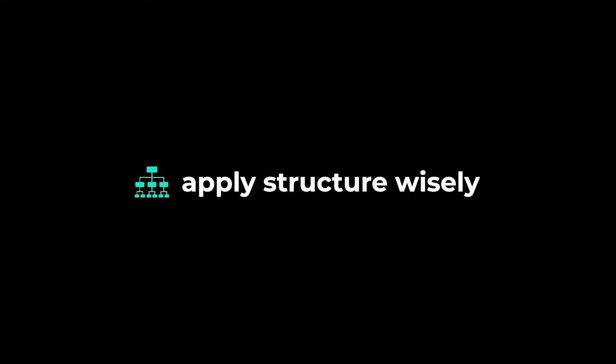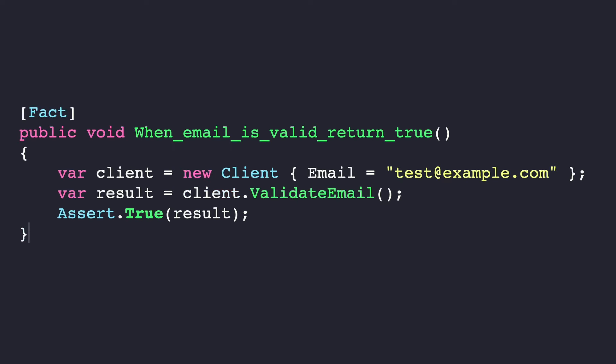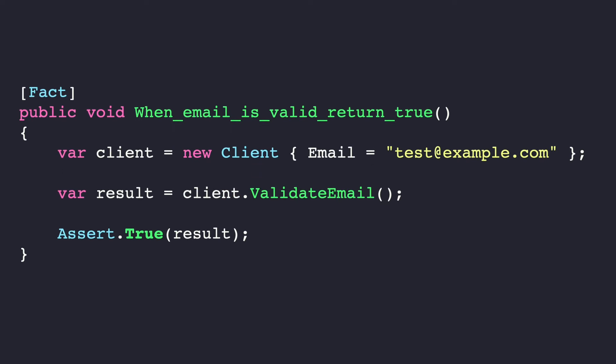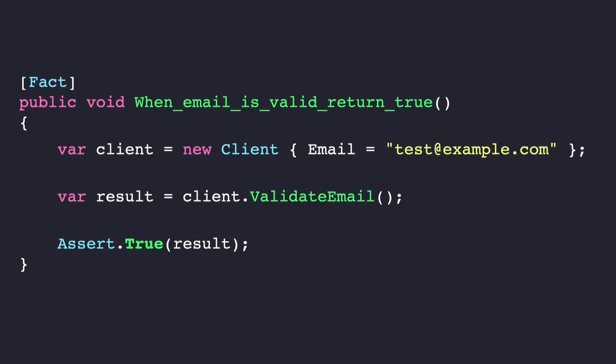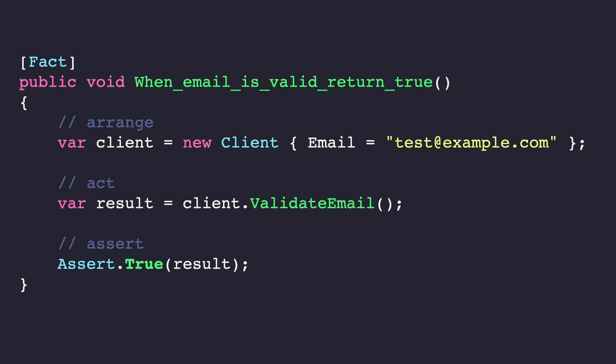Tip number one: apply structure wisely. Structure will help the reader understand the different parts of a test. That's why we can use white space to create different regions inside of a test. Commonly, we use the AAA structure — Arrange, Act, Assert — and that formula is awesome for most tests.